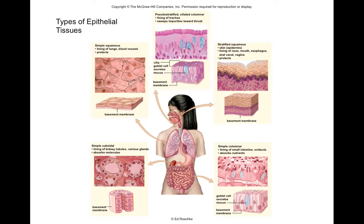The epithelial tissues — different types are shown in this diagram, which is also in your text. You have simple squamous, which lines the lungs and blood vessels. Pseudostratified ciliated columnar will be in the trachea, your windpipe. Stratified squamous will be in the vagina, mouth, and esophagus. Simple columnar cells are in your intestines, and then you have cuboidal, which will be in your kidney.